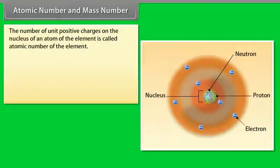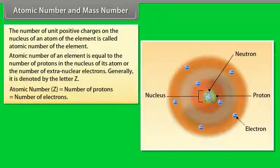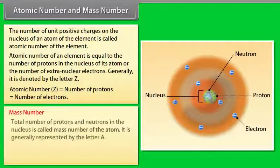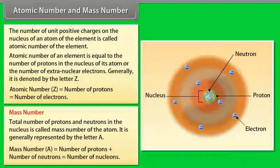Atomic number and mass number: The number of unit positive charges on the nucleus is called the atomic number (Z) of the element. Atomic number Z equals the number of protons, which also equals the number of extra-nuclear electrons. Mass number (A) is the total number of protons and neutrons in the nucleus. Mass number A = number of protons + number of neutrons = number of nucleons.